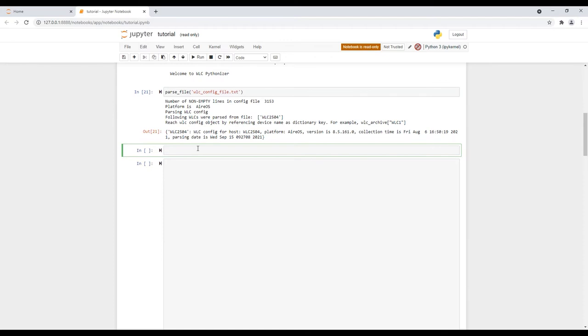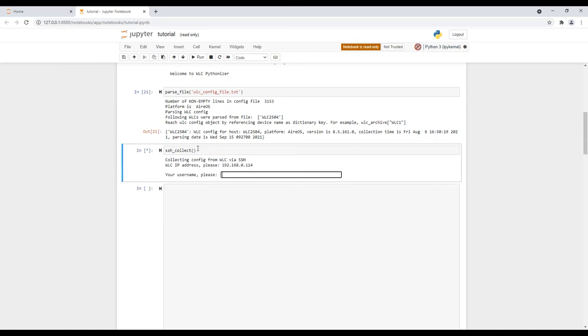Second example is collecting the data directly from device by using SSH. We just call the function named SSHCollect. The name is self-explaining. We just need to input some data. First, IP address or the host name. Second, username. And then, password. Then, we just need to wait until the script collects all the data from the device and parses it.